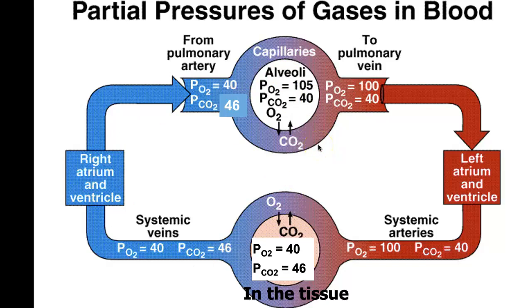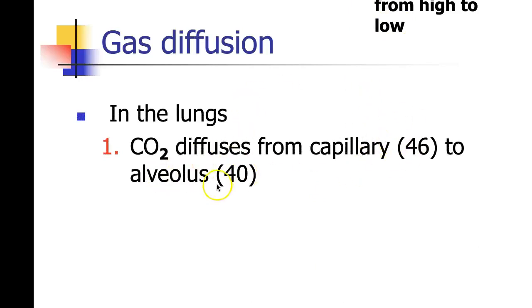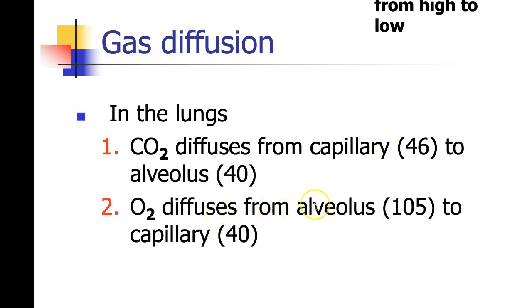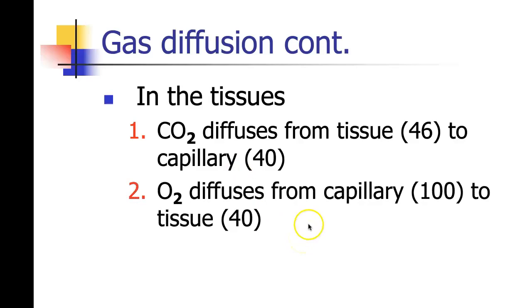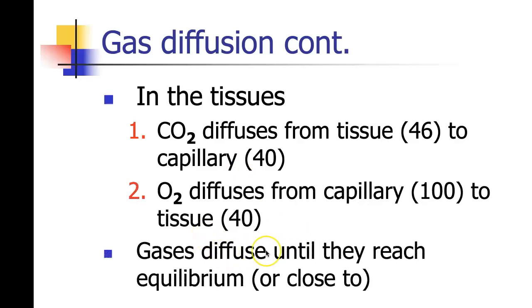We essentially have two things happening here to oxygenate our tissues: oxygen entering from the alveoli into the capillaries with CO2 being dropped off, and then at the tissues we have oxygen being dropped off and CO2 moving into the blood to go back to the alveoli. The basic principle: gas moves from high to low. Gas diffusion in the lungs — CO2 diffuses from the capillaries at 46 to the alveolus at 40; oxygen moves into the blood from the alveolus. In the tissues it's the opposite. Gases diffuse until they reach equilibrium — it's a passive principle.